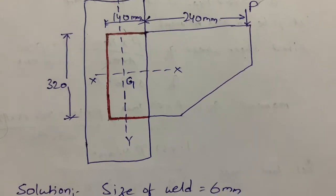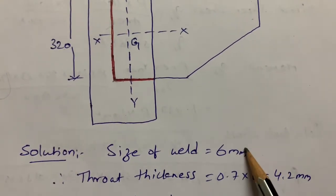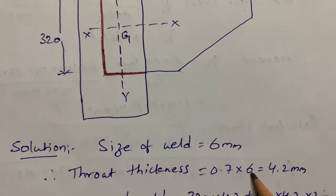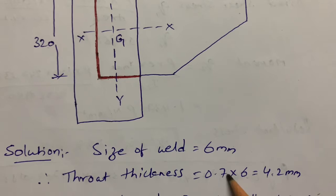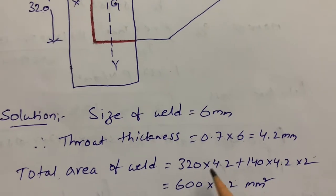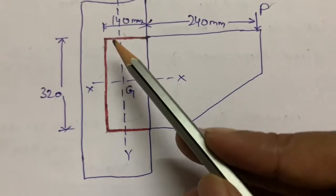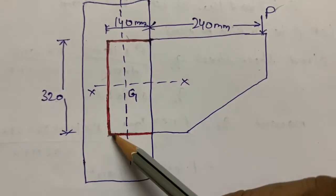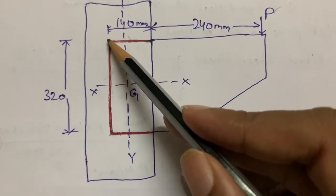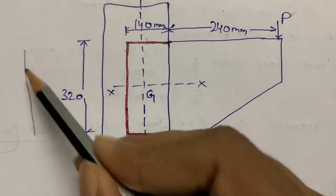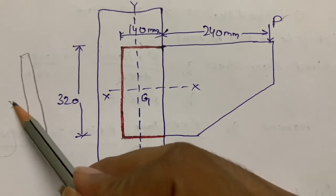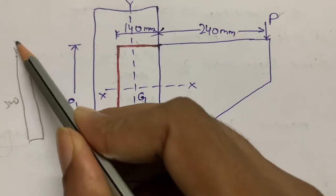First, we need to know the size of the weld, which is 6 mm as given in the question. The next step is throat thickness, which is 0.7 times the size of the weld as specified in the code book. So throat thickness = 0.7 × s = 4.2 mm. Next, we need to find the total area of the weld.